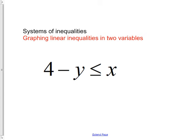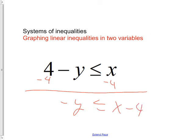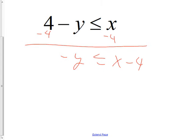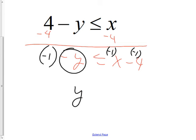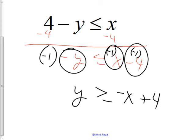A lot of people remember to flip the sign — that's the good news — but only about one in five are getting this right. Watch: subtract 4 from both sides to get −y ≤ x − 4. Subtracting four does not change the sign, but multiplying by −1 does. When I multiply everything by −1, this becomes y ≥ −x + 4. Everything changes, including the sign. Any questions? Notice I changed everything when I multiplied by negative one, including the inequality sign.